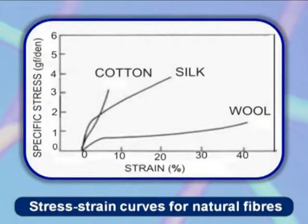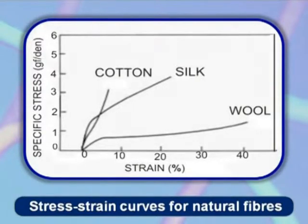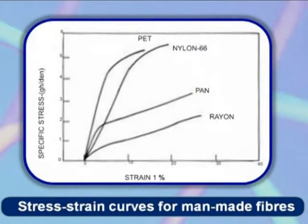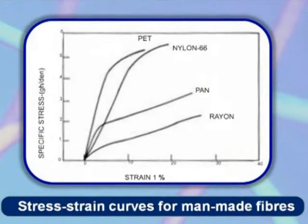The stress-strain curves of the three major natural fibers and of man-made fibers are shown in figures. The end point of the curves indicate the breaking stress and the breaking strain. Among natural fibers, wool shows considerable extension before breaking while cotton extends much less. Wool has low breaking strength compared to silk and cotton. Among the man-made fibers, polyester and nylon 6-6 fibers have high breaking strength compared to acrylic and rayon fibers.